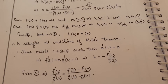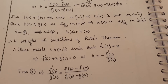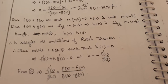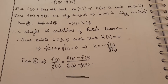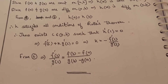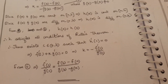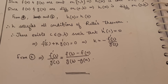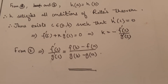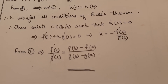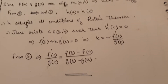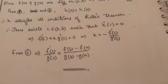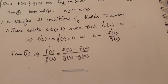Since f(x) and g(x) are continuous on closed interval [a, b], h(x) is continuous on [a, b]. Since f(x) and g(x) are differentiable on open interval (a, b), h(x) is differentiable on (a, b). From equations 1 and 2, h(a) = h(b), so h satisfies all conditions of Rolle's theorem. There exists c in (a, b) such that h'(c) = 0, giving f'(c) + k·g'(c) = 0, so k = -f'(c) / g'(c). From equation two, f'(c) / g'(c) = [f(b) - f(a)] / [g(b) - g(a)].